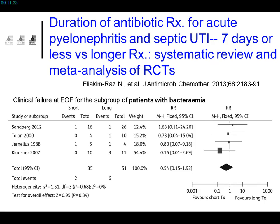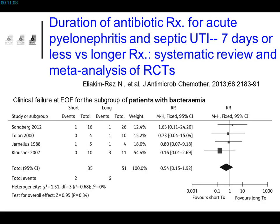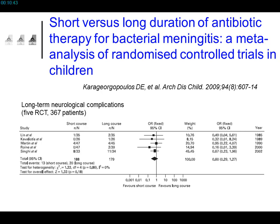For other infections, data from randomized trials show a high safety margin to reduce treatment duration. A meta-analysis on complicated urinary infections, many with associated bacteremia, shows no benefit in extending treatment beyond seven days. For bacterial meningitis, at least five randomized trials show that short therapies have no impact on neurological complications.